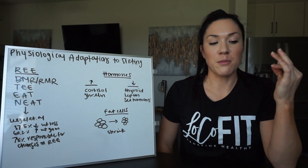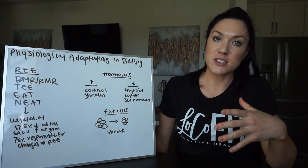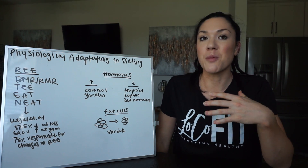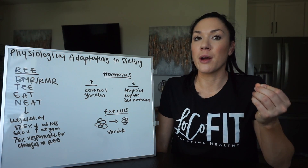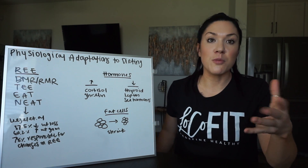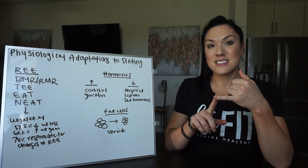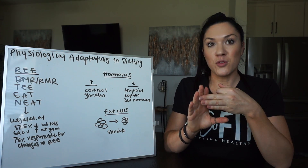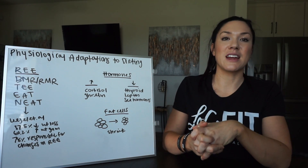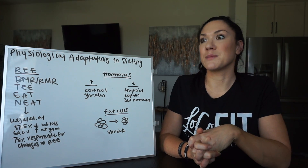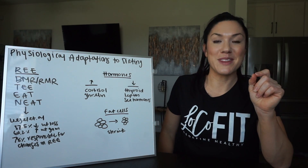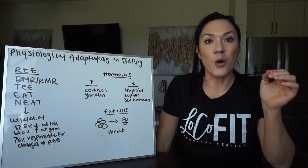BMR or RMR stands for basal metabolic rate or resting metabolic rate. There are minor differences. Basal metabolic rate typically involves people staying in the lab overnight to get testing done, which most people do not want to do. So most people are going to get an RMR, which is your resting metabolic rate — they're very similar. When you do your RMR, you need to be in a relaxed state; it should be in the morning with no food and no water. You don't want anything to spike your RMR, so doing it fasted in the morning is correct.